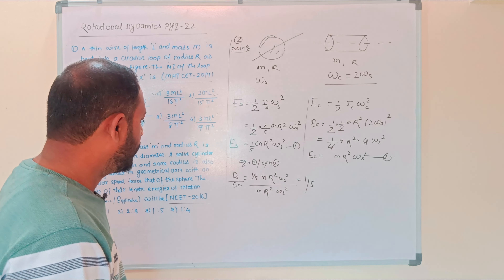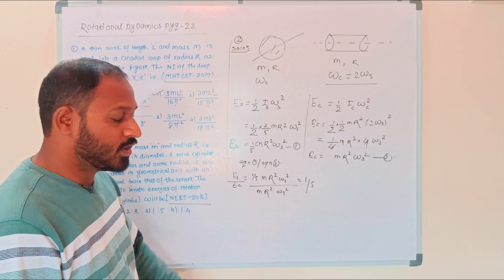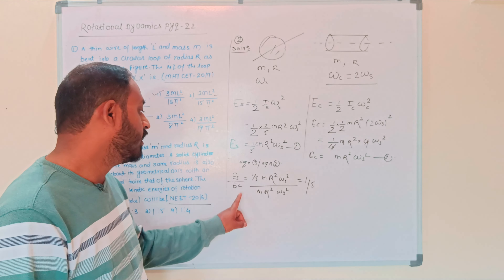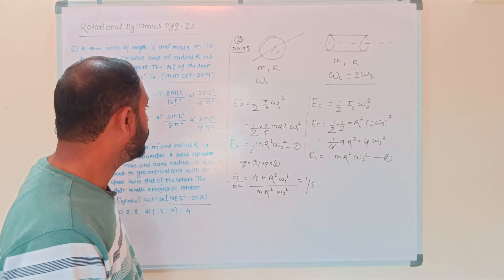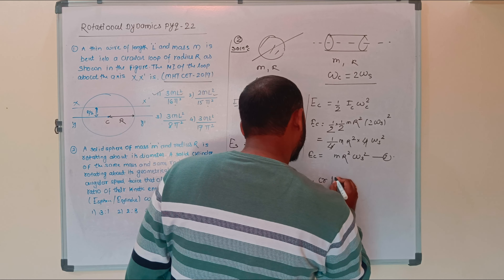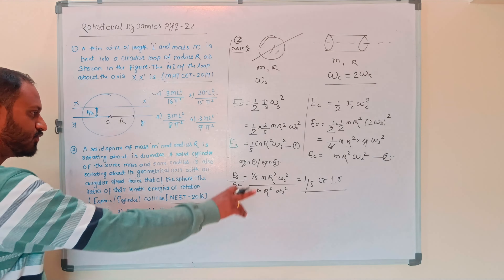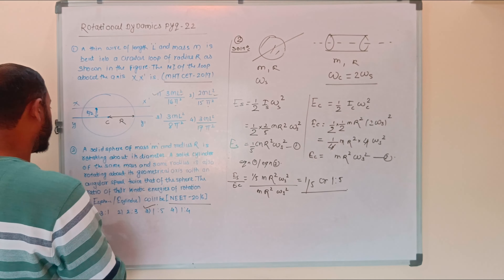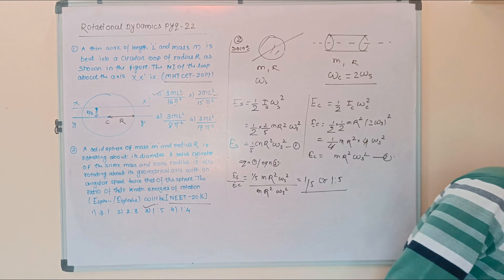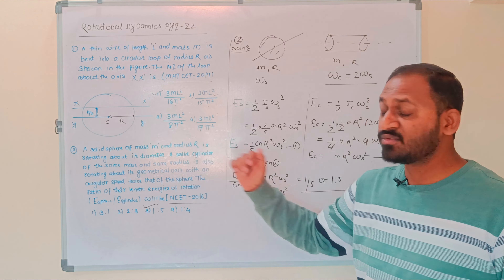Therefore the ratio of rotational kinetic energy of the solid sphere to the solid cylinder becomes 2:5. The answer in the format 1:2 for the option — option number three is the correct answer for this numerical.